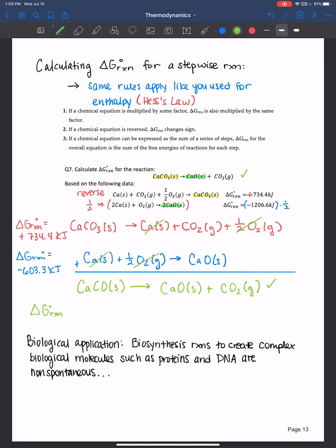The Gibbs free energy for the reaction in green, the overall reaction, is equal to the Gibbs free energy for the first one, so 734.4 kilojoules, plus the Gibbs free energy for the second one, which is negative 603.3 kilojoules, and that gives you a plus 131.1 kilojoules per mole.